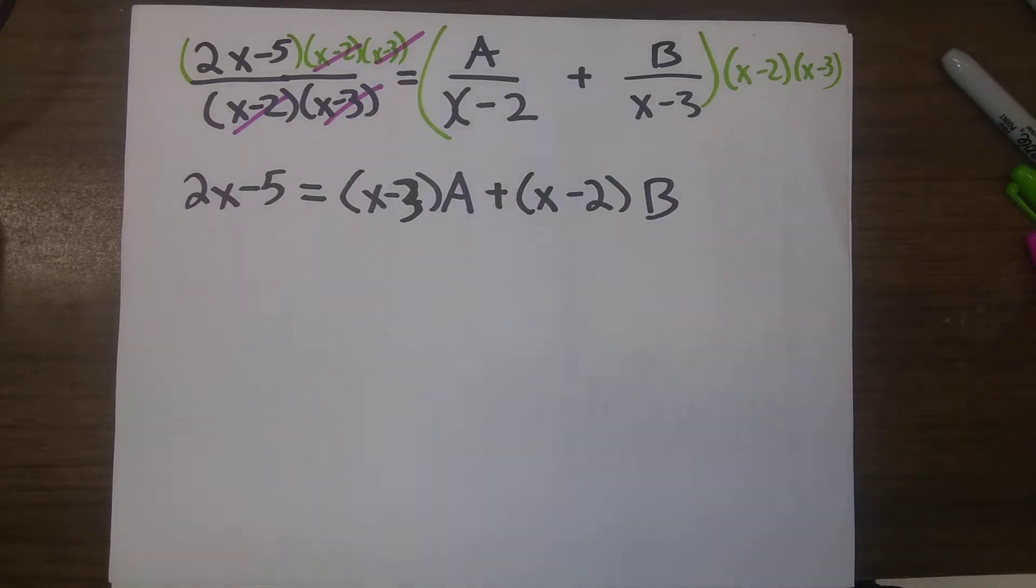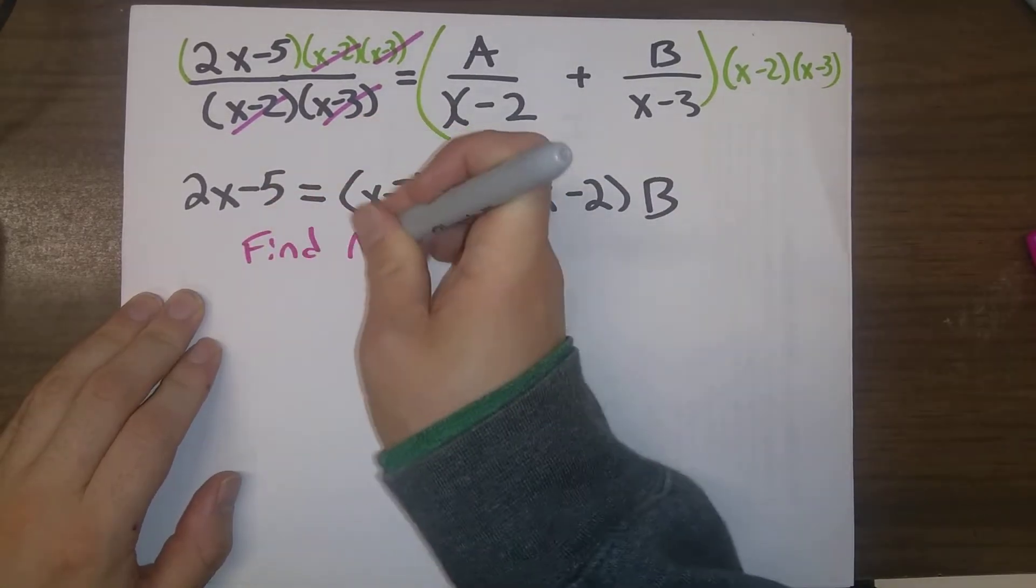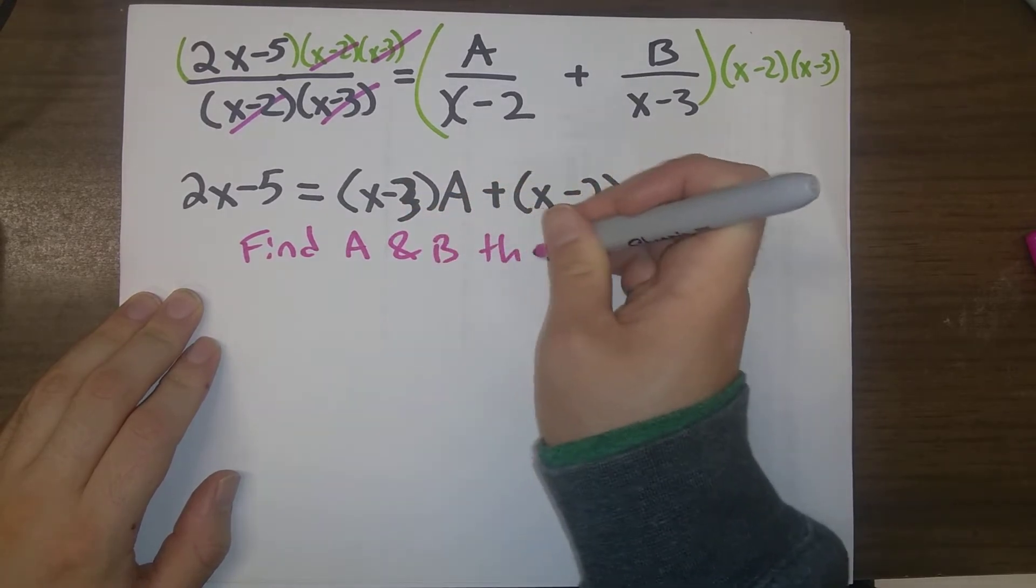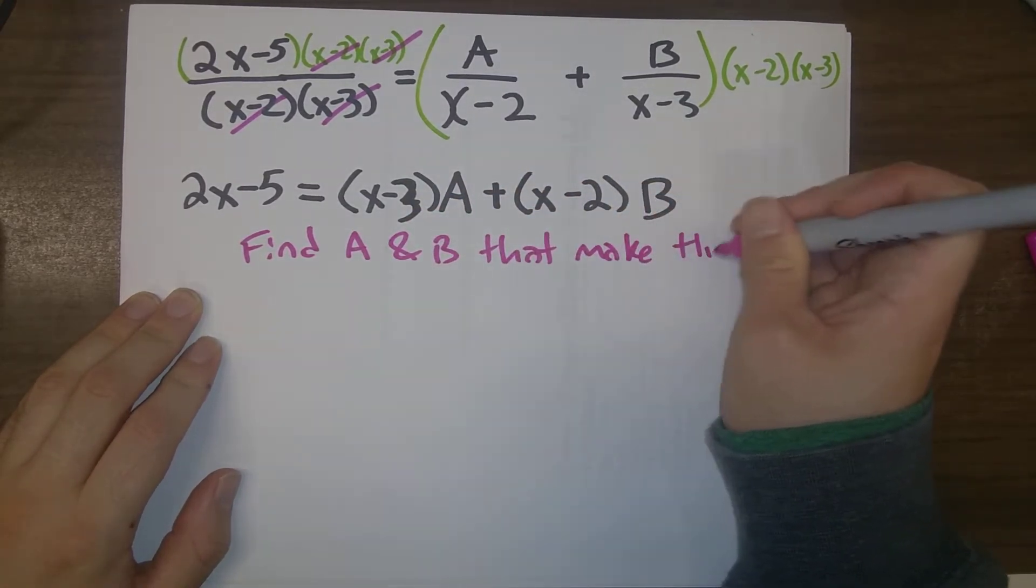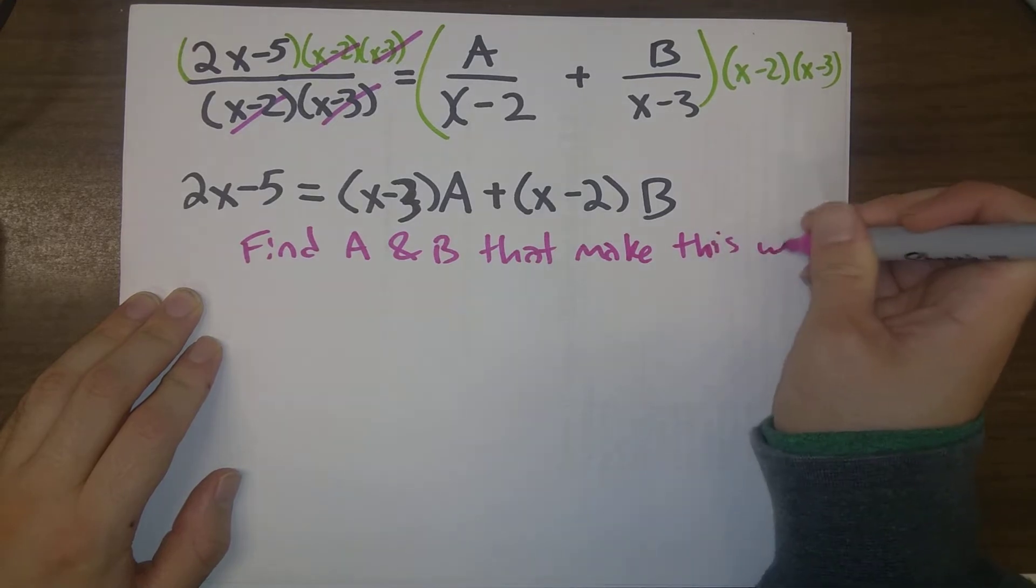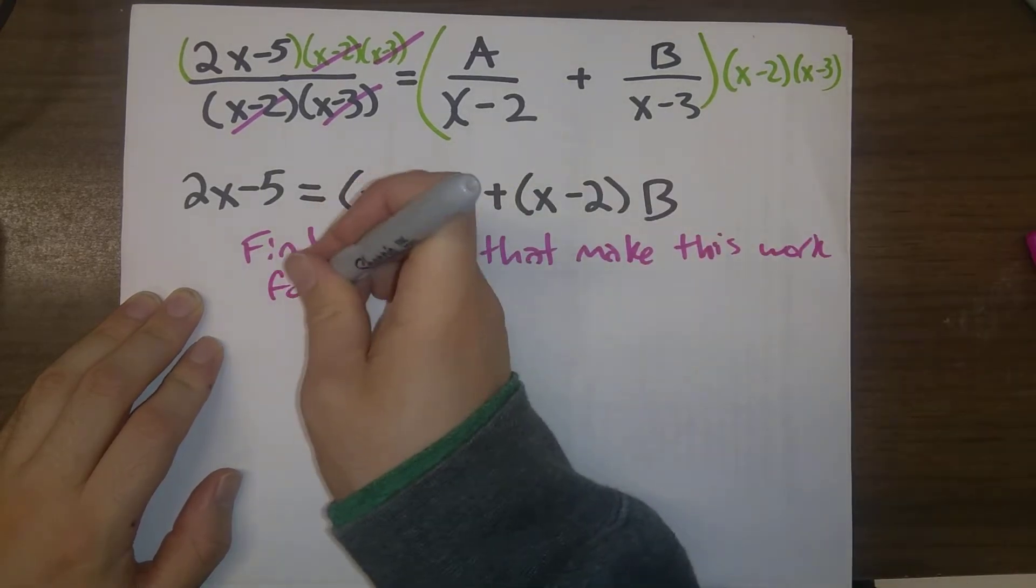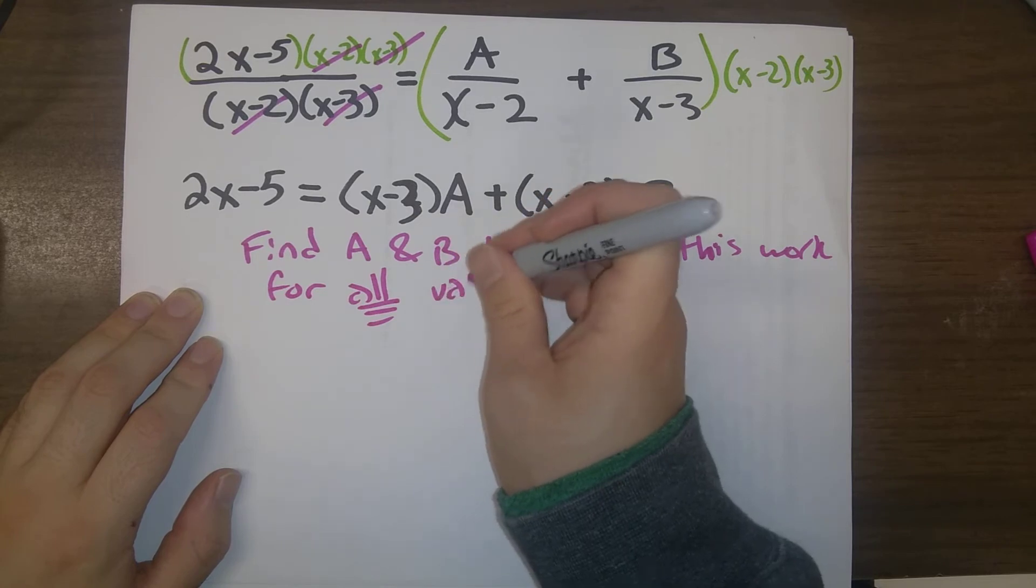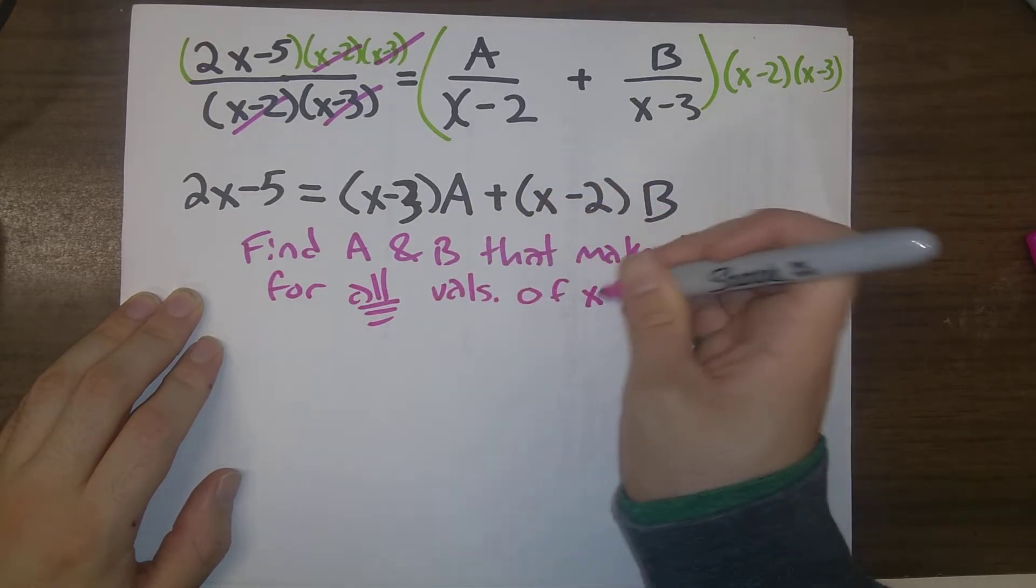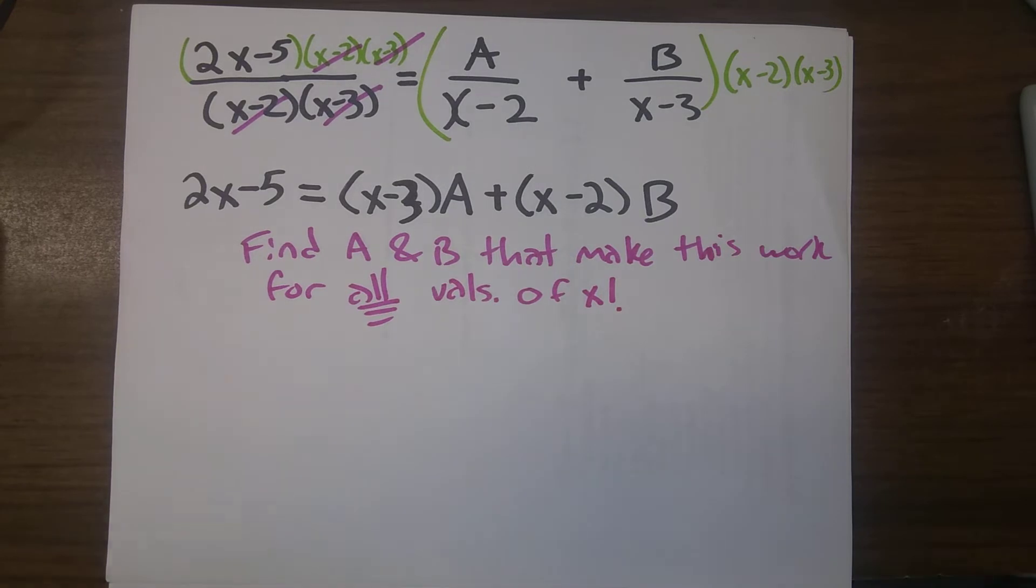So we have to figure out what are A and B that make this work. The important thing is we want to find A and B that make this work for all values of x. In particular, we're allowed to choose any values of x that we want here to substitute in. We know that this is going to have to be a true equation. It will help us figure out what A and B are.